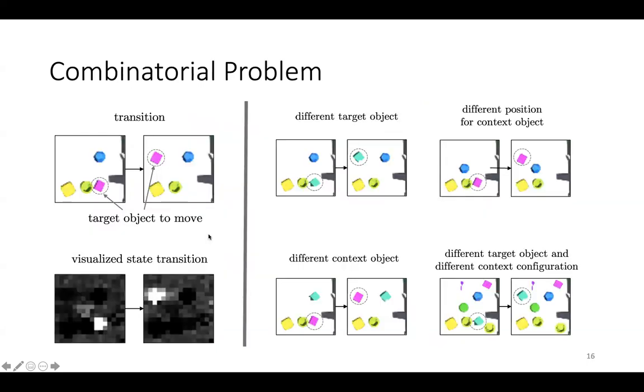The combinatorial problem is the problem of efficiently compressing the combinatorially large space of object configurations to represent transformations in a way that can be reused in different contexts. Here, you see the same state transition for a single object, but shown in different contexts, whether the background objects are in different configurations or the target object itself is different. Monolithically representing such scenes as prior methods do would not expose the appropriate problem structure that enables us to design algorithms that disentangle transformations from the entities they operate on.